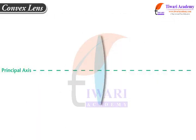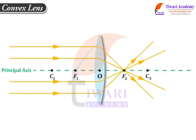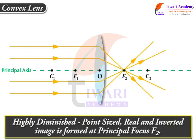A convex lens converges parallel rays coming from an object at infinity, and a highly diminished, point-sized, real and inverted image is formed at principal focus F.